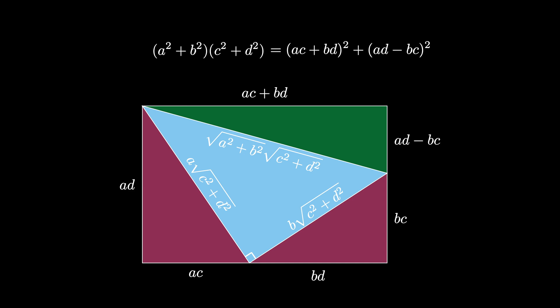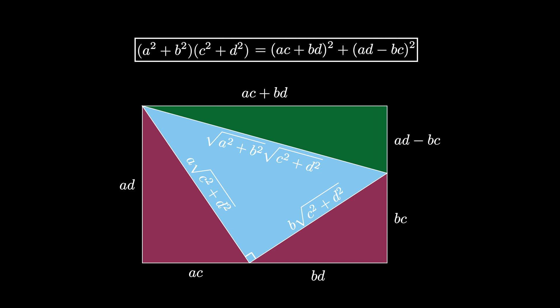This theorem says that the product of two sums of squares must be a sum of squares itself. The result is of particular interest when all the numbers A, B, C, and D involved are actually integers and not just real numbers. In this case, we call this Diophantus' sum of squares identity.